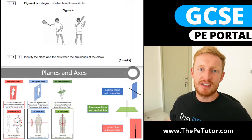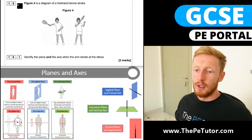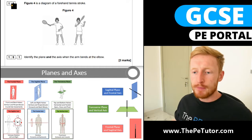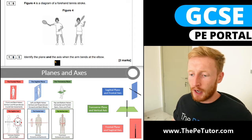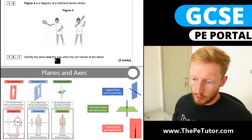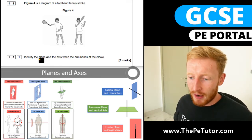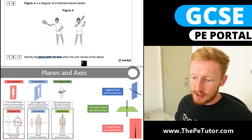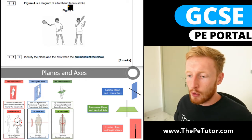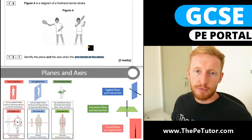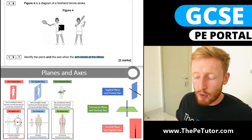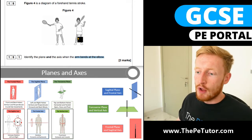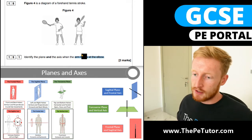Hello and welcome to this exam question video. Today we're looking at AQA GCSE, specifically question 19.1. We'll look at 19.2 later, but for this one we are looking at planes and axes where the arm is bending at the elbow in figure four. We've got a tennis player going from a forehand preparation phase through to the execution phase.